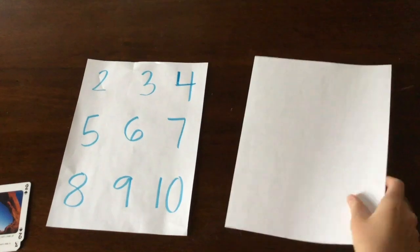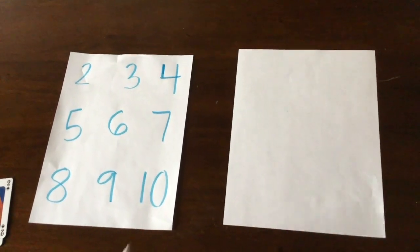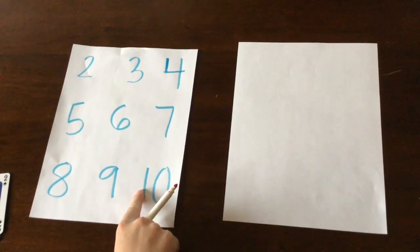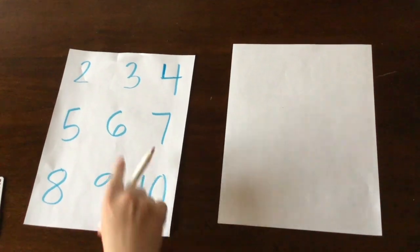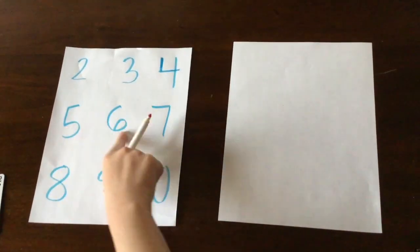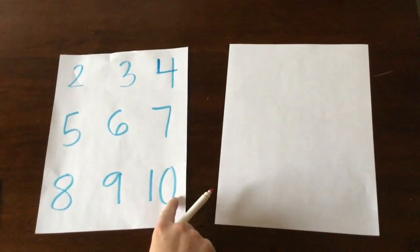We are going to set up our number hunt math activity game. First, get two sheets of paper, and have a parent write down numbers 2 through 10, just like I did here.